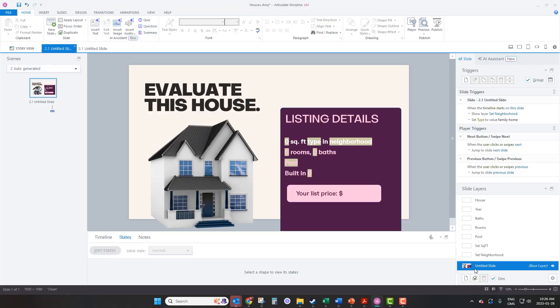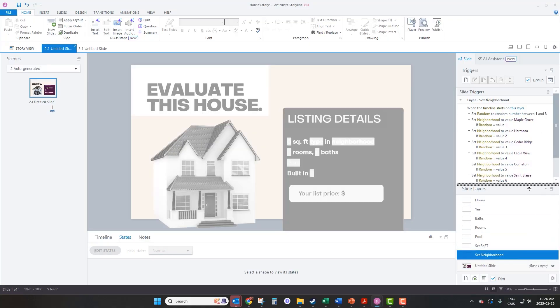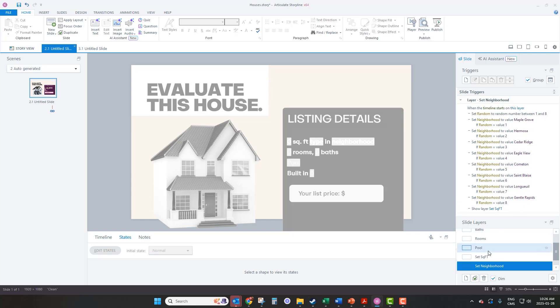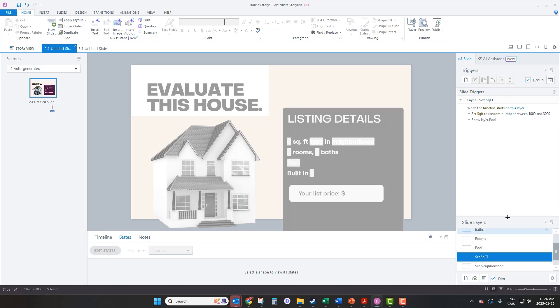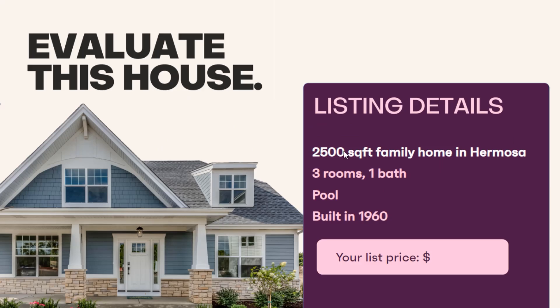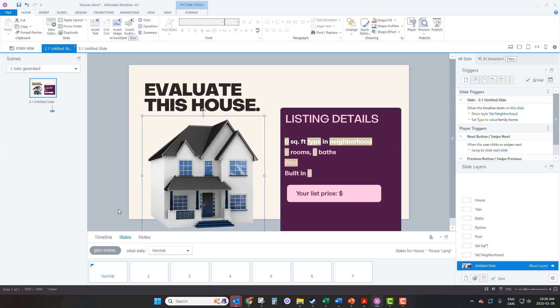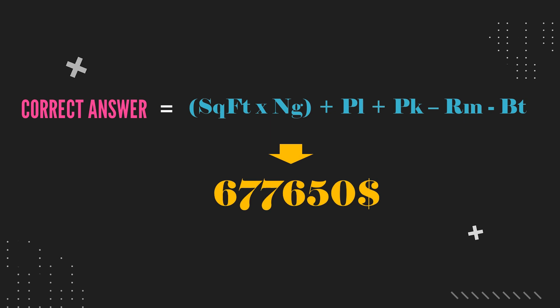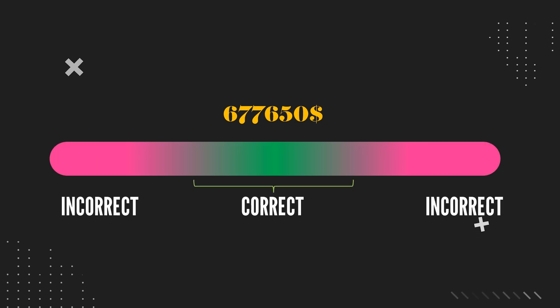In step 4, at runtime you will have the program randomly pick one from each of these lists. Set the neighborhood by picking a number between 1 and 8; for square footage, pick a number between 1,000 and 3,000, and so on for each of your variables. Those randomly generated values get plugged into the blanks — giving me, for example, a 2,500 square foot house in Hermosa with a pool, three rooms and one bath. That's just one of thousands of houses I can generate from those six lists. The program also calculates the correct answer by a formula that accounts for all the variables, and if the player's estimate falls within an acceptable range of the right answer, the player succeeds.